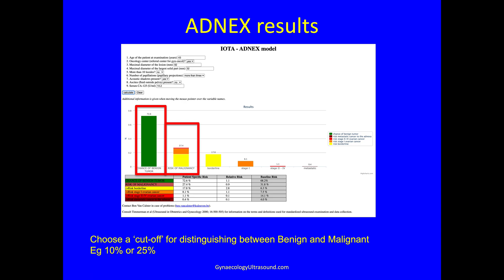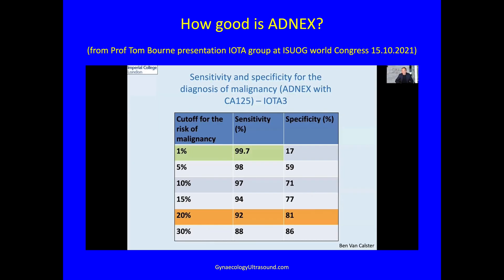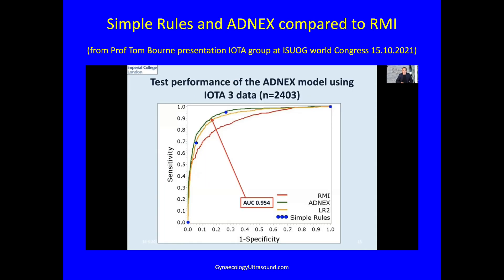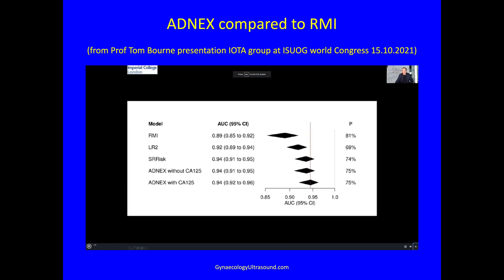You then choose a cutoff for distinguishing between benign and malignant. The IOTA group usually recommends a cutoff of 10%, so a lesion above that would be categorised as malignant. Comparing simple rules and ADNEX to the RMI — the old-style test — the area under the curve is far greater for simple rules and ADNEX. ADNEX performs far better than the risk of malignancy index.